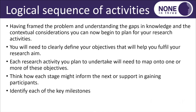Having framed the problem and understood the gaps in knowledge, you can begin to plan your research activities. You need to clearly define your objectives that will help you fulfil your research aim. Each research activity you plan to undertake needs to map onto one or more of those objectives — be really clear about what you're hoping to achieve and how it fits the overall picture. Think about how each stage might inform the next or support you in gaining further participants. Identify key milestones — landmark events marking completion of each part — and they may have standalone outputs for you.